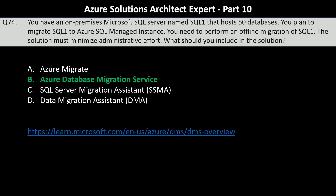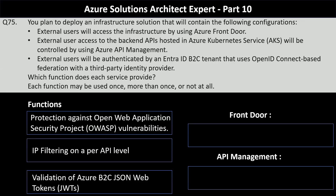Question number 75. You plan to deploy an infrastructure solution where external users access the infrastructure via Azure Front Door; external user access to backend APIs hosted in Azure Kubernetes Service is controlled by Azure API Management; and external users are authenticated by an Entra ID B2C tenant using OpenID Connect-based federation with a third-party identity provider. Which function does each service provide?